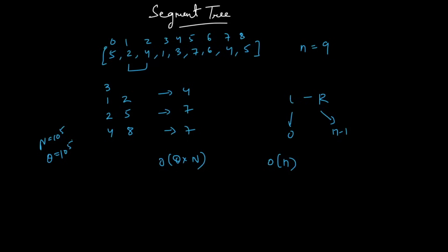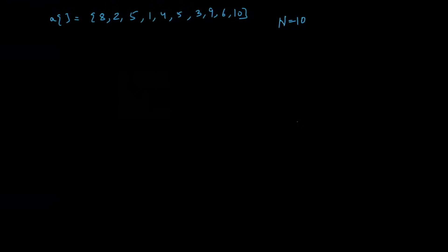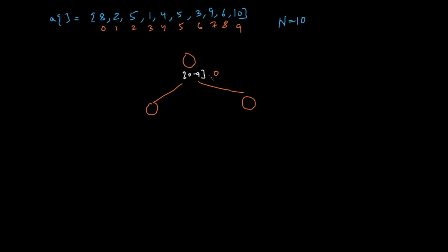A segment tree is a data structure which stores the resultant of a given range at a given index in an array. The root stores the result between the 0th and 9th index. Using 0-based indexing, the root node is marked as 0. The root has two children. Since the root has index 0, its left child always has index 2*index + 1 and its right child has index 2*index + 2. So the left child is index 1 and the right child is index 2. The left child stores the result for range 0 to 4 and the right child for range 5 to 9.